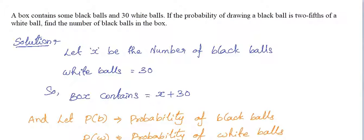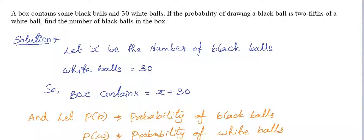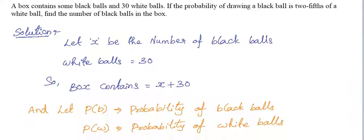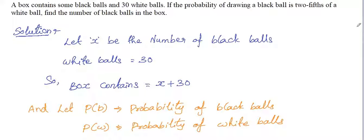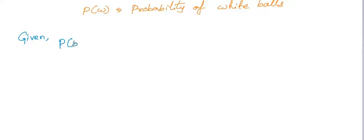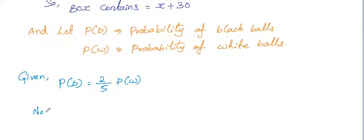Now check the given condition in the question, which is the probability of drawing black balls is two-fifths of the white ball. So we can write the expression as P(B) equals to two-fifths into P(W).